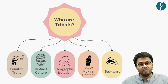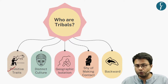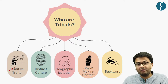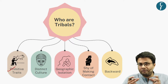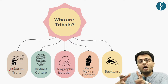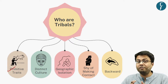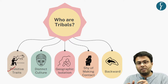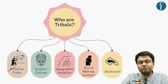Tribals are those who demonstrate what are known as primitive traits. They are primarily engaged in activities like hunting, gathering, or shifting cultivation — where they cultivate a piece of land, and when that land becomes barren, they move to another piece of land. This is quite different from normal agriculture, where people cultivate the same piece of land over time rather than shifting from one land to another.